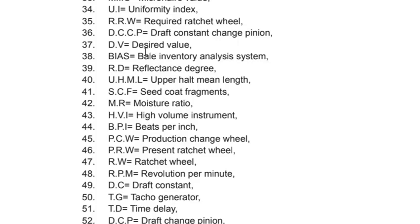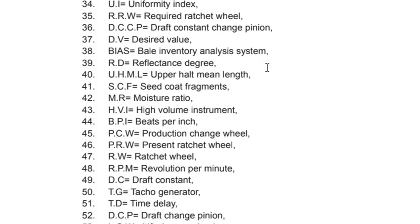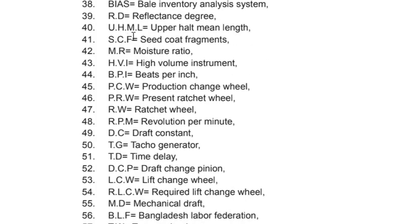More spinning technical abbreviations: RPM – Revolutions Per Minute; DC – Draft Constant; TG – Texture Generator; TD – Time Delay; DCP – Draft Chance Pinion; LCW – Lift Chance Wheel; RLCW – Required Lift Chance Wheel; MD – Mechanical Draft; BLF – Bangladesh Labor Federation; TW – Taper Wheel; TCP – Twist Chance Pinion; TCCP – Twist Constancy Chance Pinion.